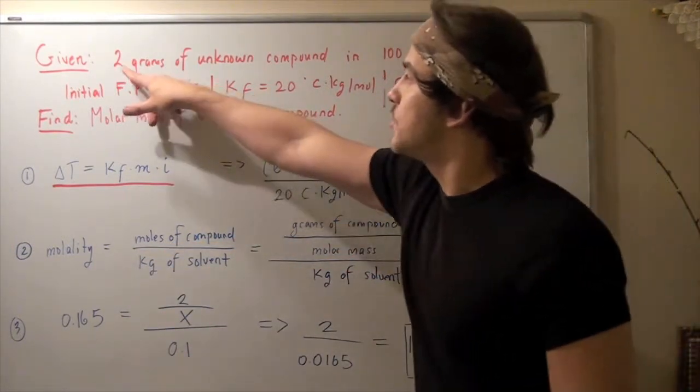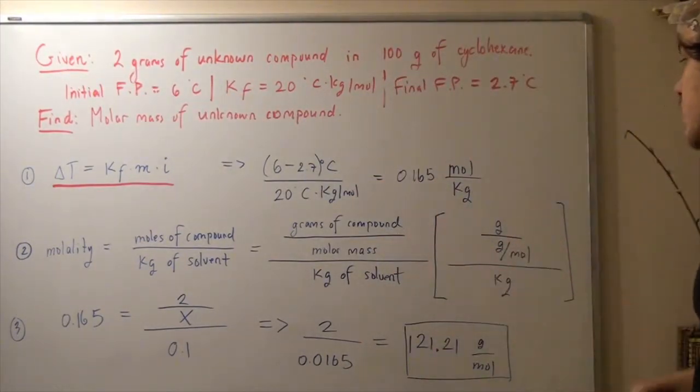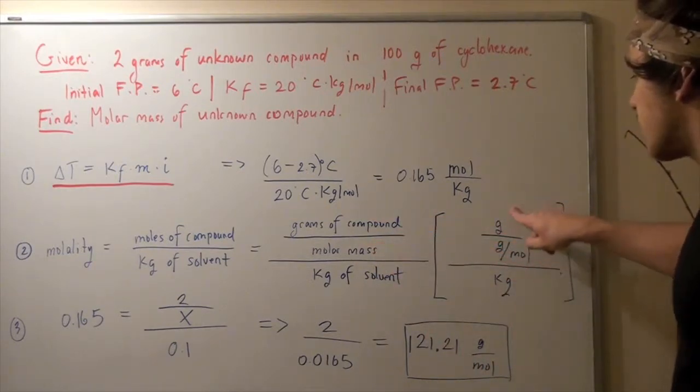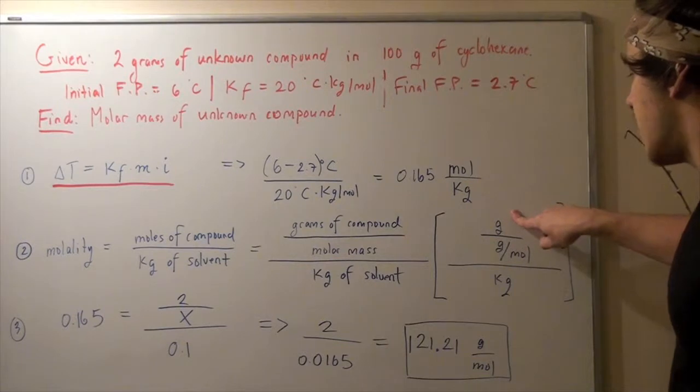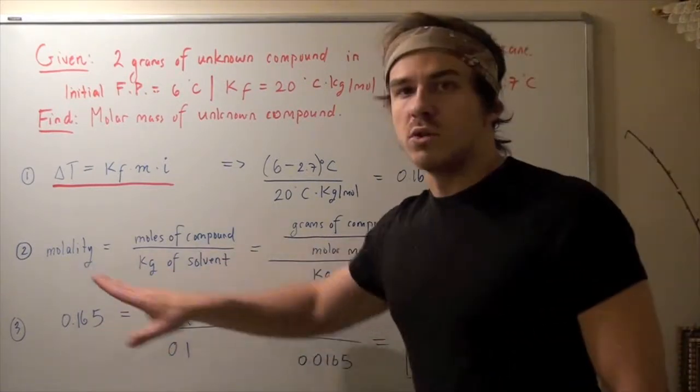Remember, the grams of compound was given initially at 2 grams of unknown compound. And we can check using our units that this makes sense. Grams divided by grams per mole, the grams cancel, moles goes on top, and we're left with moles per kilogram. And that's exactly what molality is.